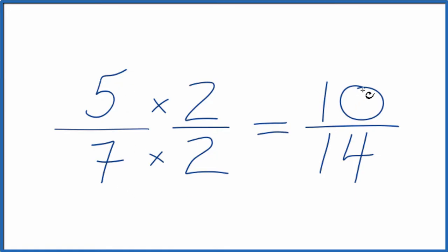So 5/7 and 10/14 are equivalent fractions. If you divide 5 by 7 or 10 by 14, you'll get the same decimal answer.